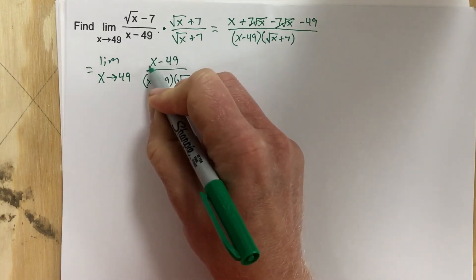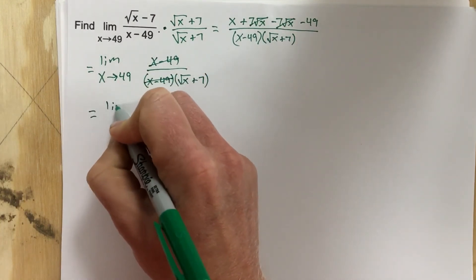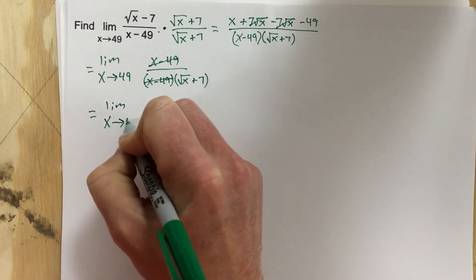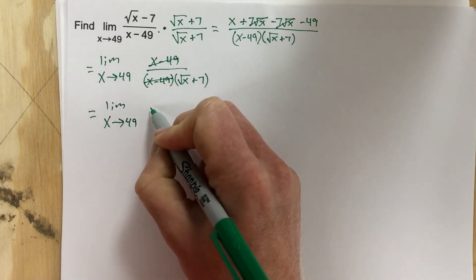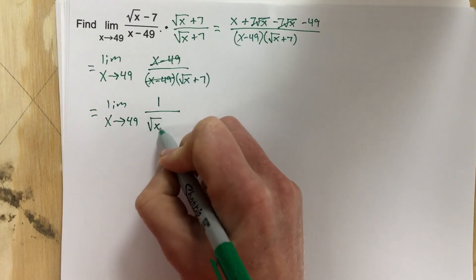I can now cancel x minus 49 in both, and that's limit as x approaches 49 of 1 over root x plus 7.